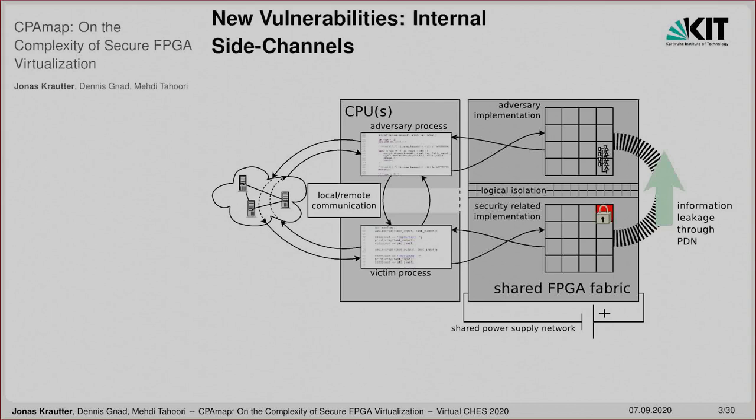For fault attacks, the attacker can cause voltage fluctuations strong enough to inject faults into a victim design. However, while fault attacks can at least be detected by the hypervisor, side-channel attacks are hard to detect and the sensors can be hidden very well in seemingly benign designs.